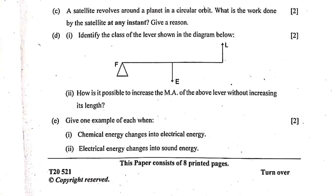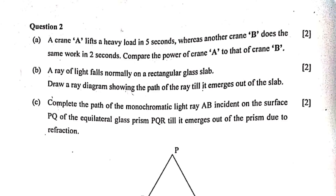Question 1e: Give one example each of energy conversions. When chemical energy changes into electrical energy: a cell in use, or when current is drawn from the cell. When electrical energy changes into sound energy: a loudspeaker in use. The phrase 'in use' is the keyword that earns you the marks.